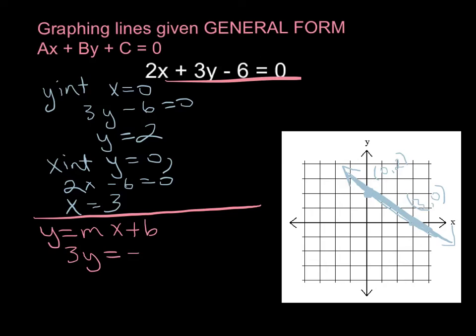All we do is isolate our y variable and then it should end up being that way. So let's start off as 3y = -2x + 6. So move everything over except for the term that has the y, and then divide everything by 3, and we end up with y = -2/3x + 2.